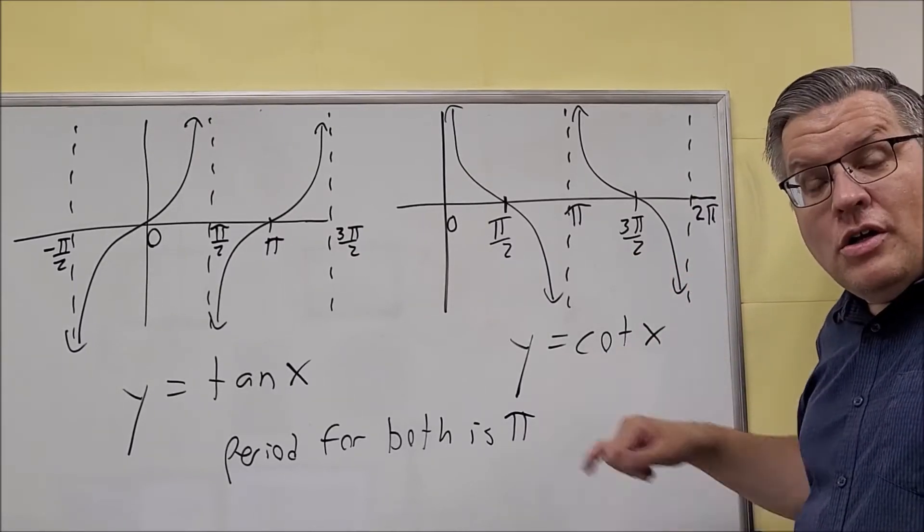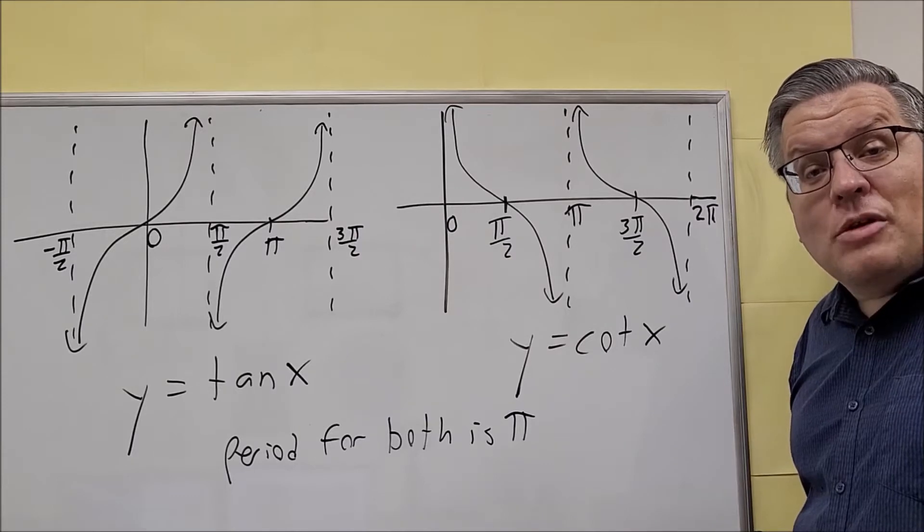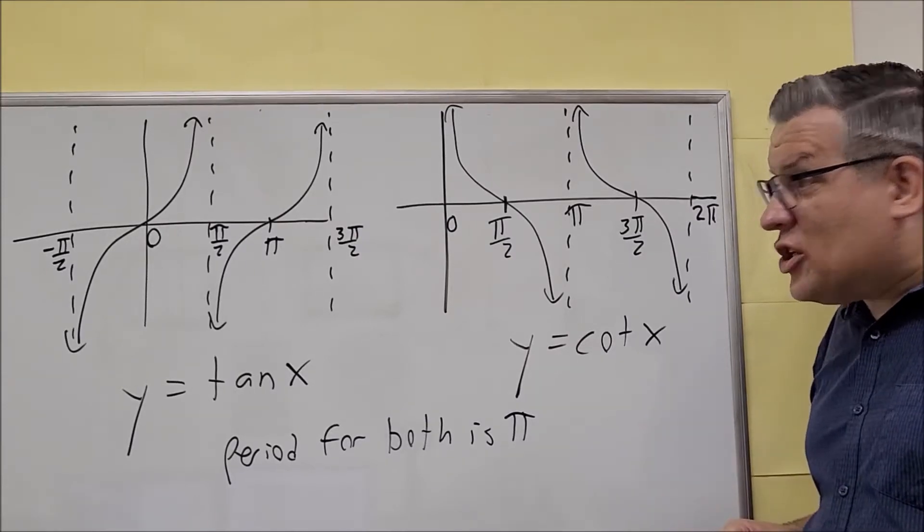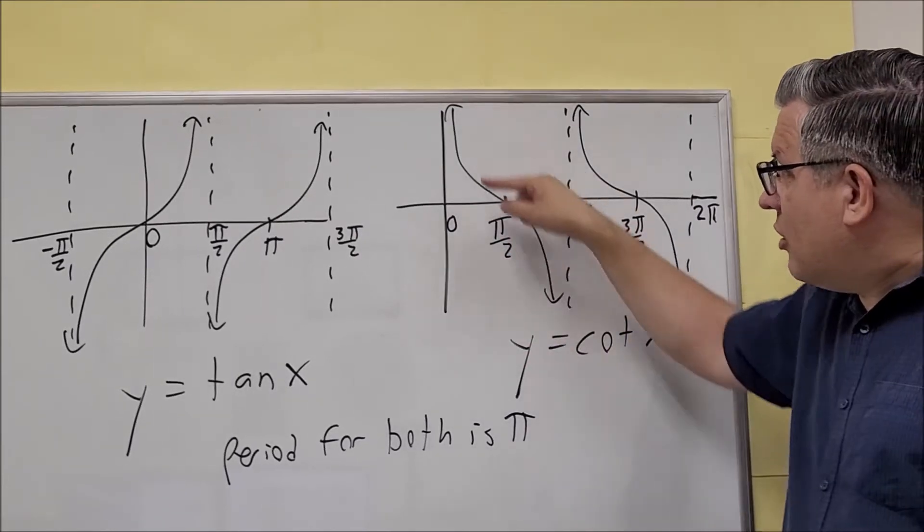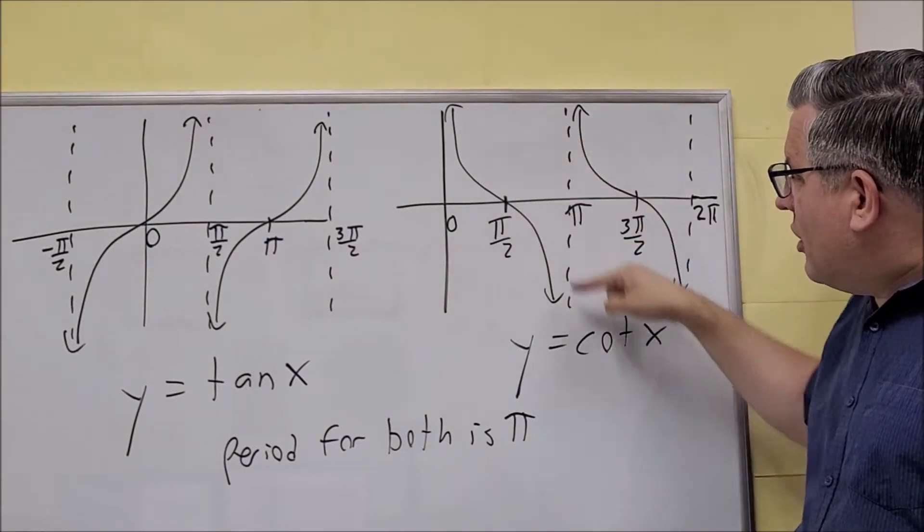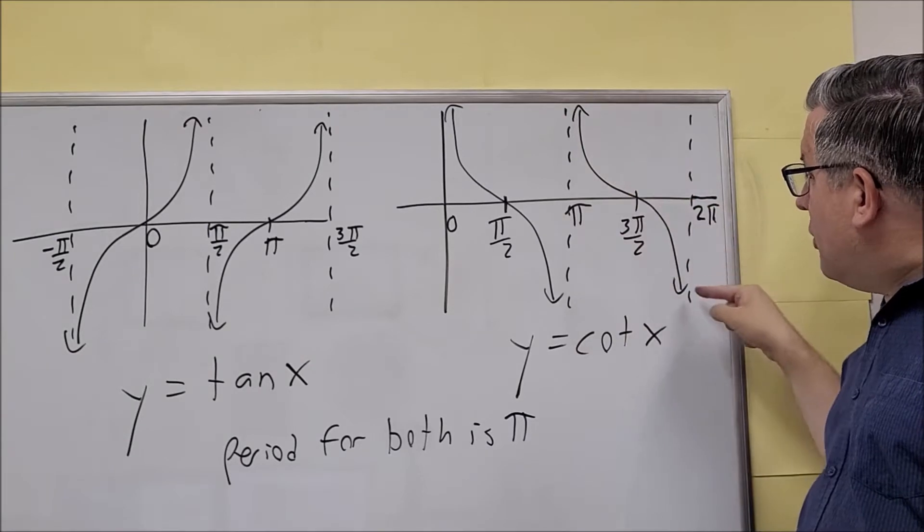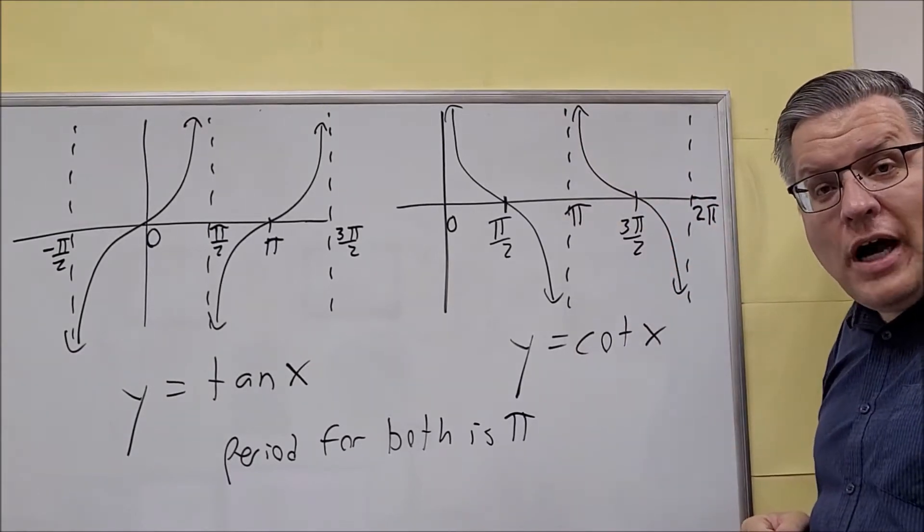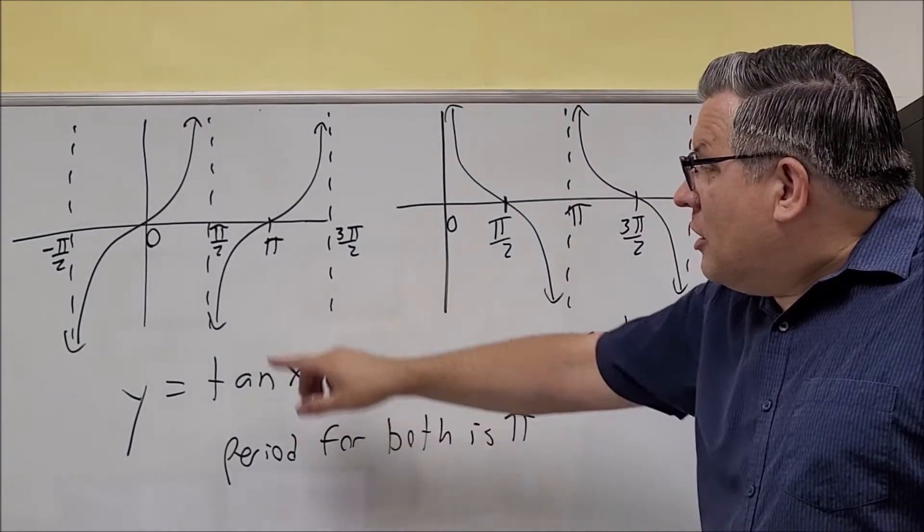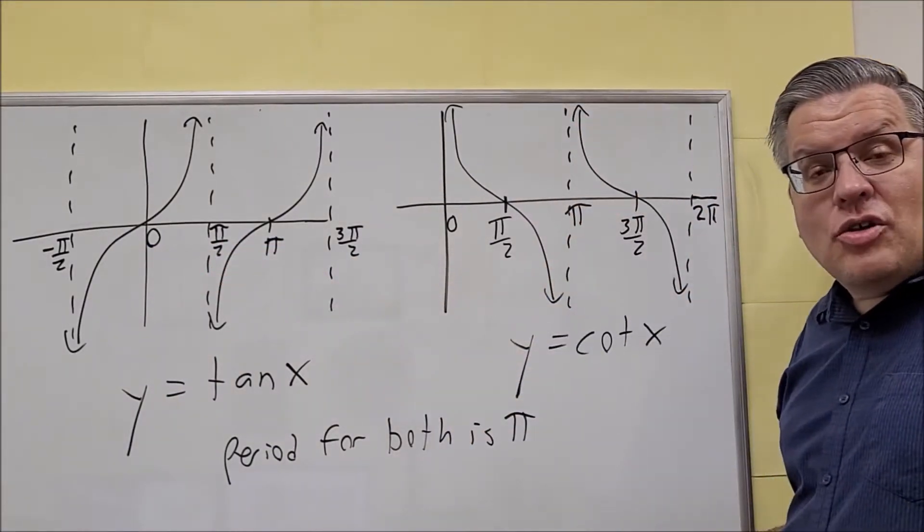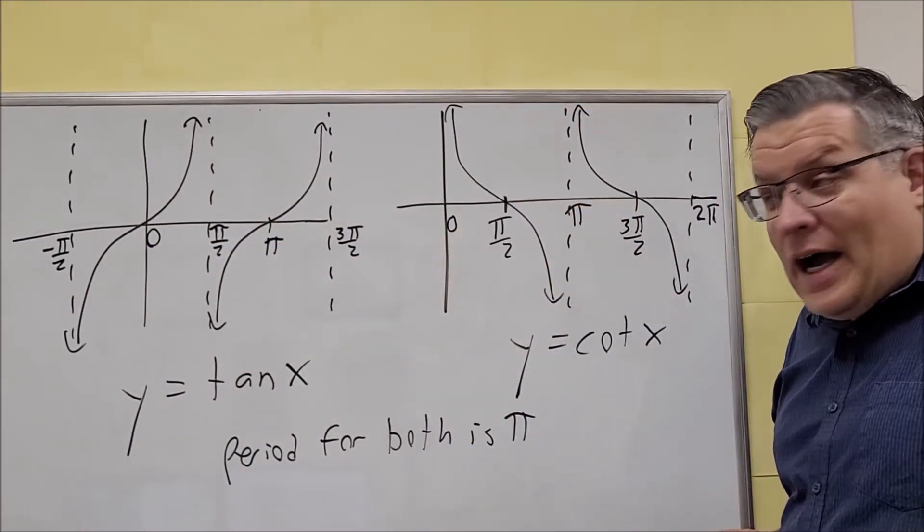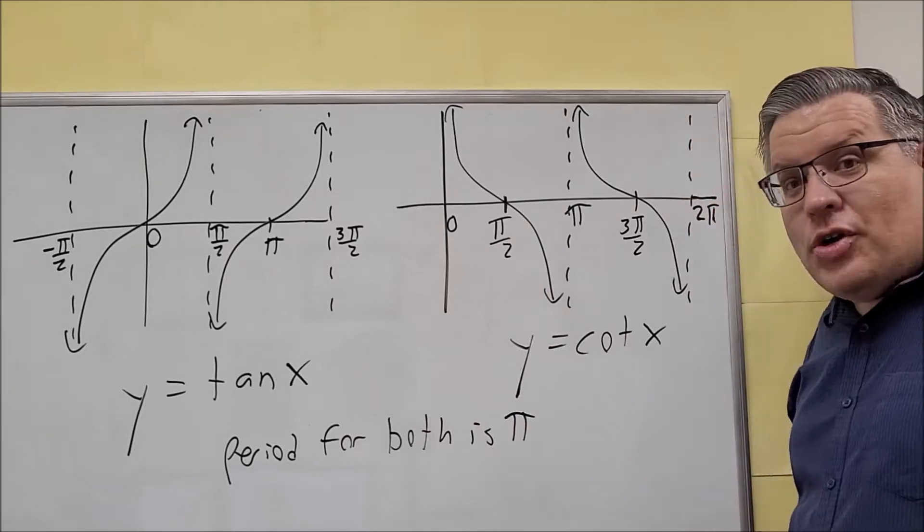The thing that makes these different also is they have a different period. The period of these is going to be π. The reason why it's π is because that's how long one cycle is. If we have one of these things from here to here, it's going to be a π. Then the same thing gets repeated here between π and 2π. Just like over here, between negative π over 2 and π over 2, that would be considered one full value of π, and so that would be its period.